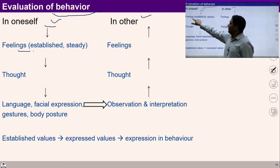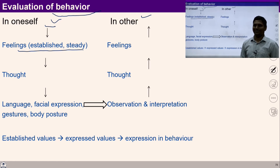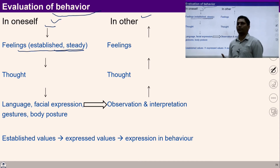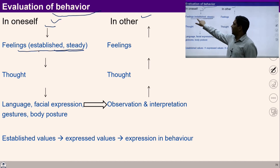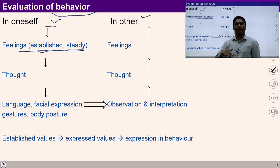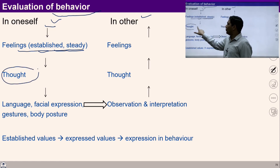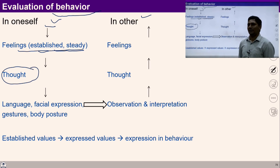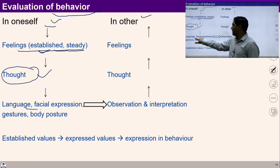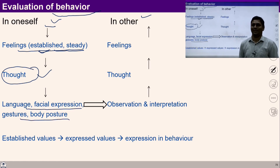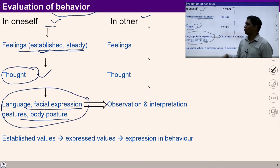In oneself, I can see feelings which are established in me. With little exploration and investigation, I can see that there are established values in me — trust, respect, affection, up to love — continuous and ingrained in me. With these feelings I can also observe my thoughts. While communicating to others, I can see my feelings and my thoughts, then I express these thoughts using language, facial expression, gesture, body posture, etc. I take help of my body to express my feelings and thoughts.